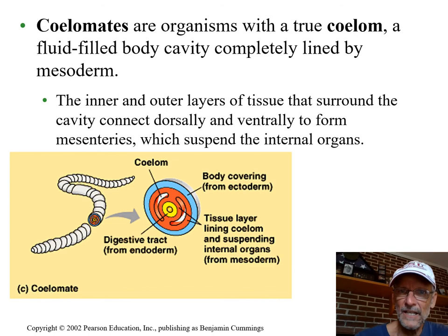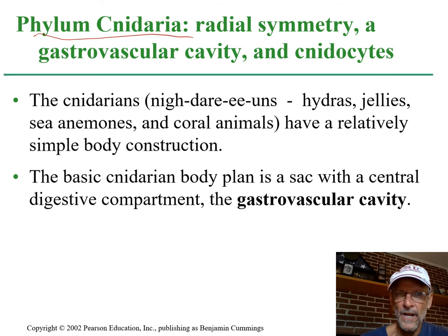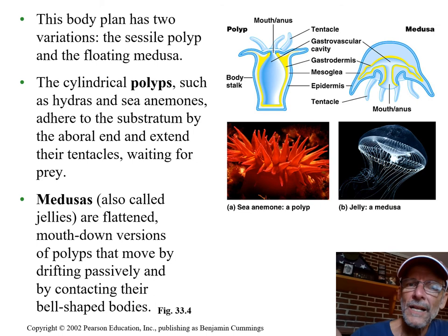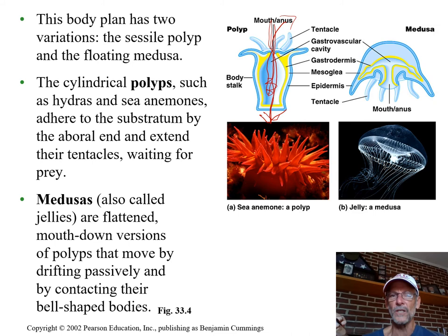The body cavity is called a coelom — that's the cavity that contains your digestive stomach and all that stuff surrounding it. Now, Cnidarians — those radially symmetrical jellyfish-like things — one of their characteristics is that they don't have a mouth and an anus. They don't have a digestive system where food just passes through in one direction. Food comes in, gets digested, and if it doesn't get digested, it goes right back out. This group involves corals, anemones, and jellyfish.